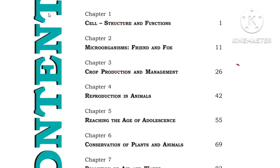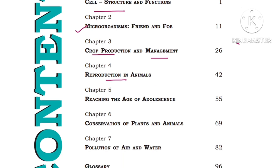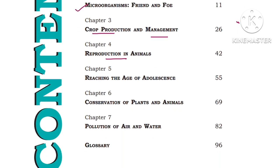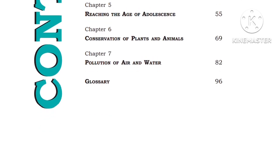Hi children, welcome back to Lakshmi Study Room. Today I am going to teach AP State Board new syllabus for eighth class, that is Biology. This Biology textbook contains total seven chapters: Chapter 1 is Cell Structure and Functions, Chapter 2 is Microorganisms Friend and Foe, Chapter 3 Crop Production and Management, Chapter 4 Reproduction in Animals, Chapter 5 Reaching the Age of Adolescence, Chapter 6 Conservation of Plants and Animals, and Chapter 7 Pollution of Air and Water. Now I am going to teach Chapter 1, that is Cell Structure and Functions.